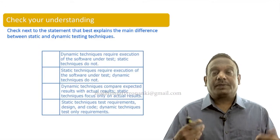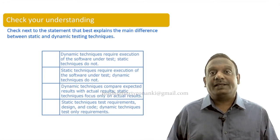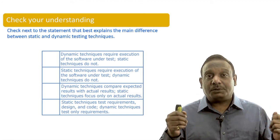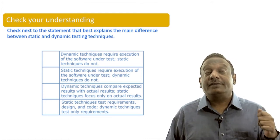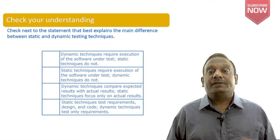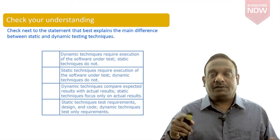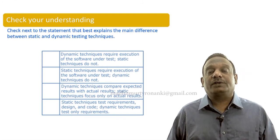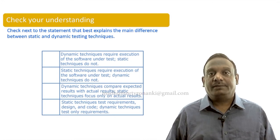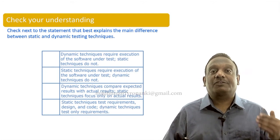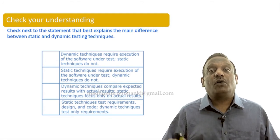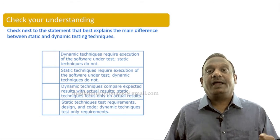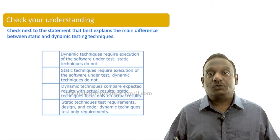Let us check our understanding about the difference between dynamic techniques and static testing techniques one more time. You have four items there describing the main difference. The first statement: dynamic techniques require execution of the software under test — static techniques do not. The second statement: static techniques require execution of the software under test — dynamic techniques do not. The third: dynamic techniques compare expected results with actual results — static techniques focus only on actual results. The fourth: static techniques test requirements, design, and code — dynamic techniques test only requirements.